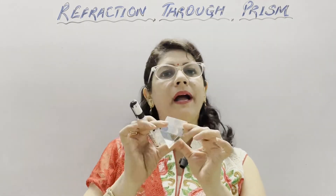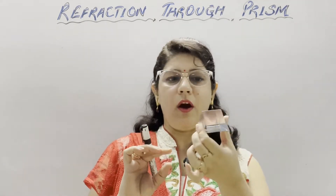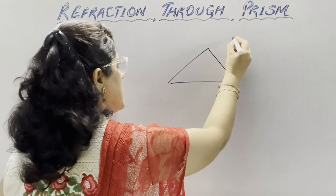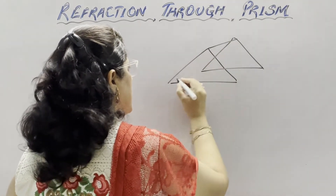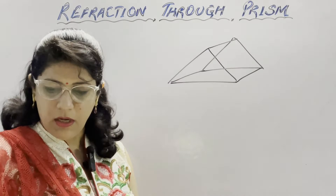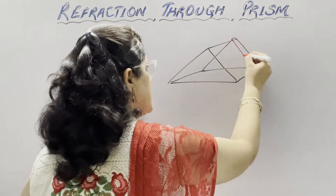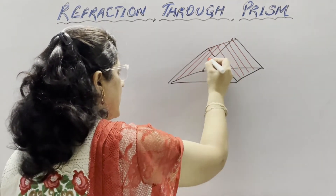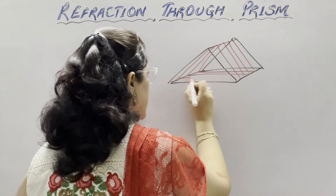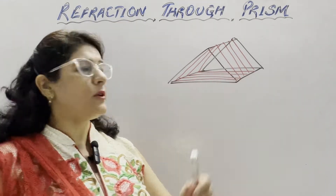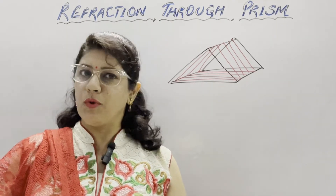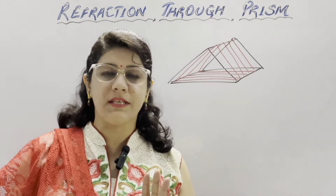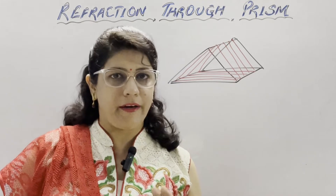Prism is a transparent medium bounded by plane surfaces. This is the triangular principal section of the prism. Three rectangular sections and two triangular sections give us a prism. So you can say that prism is a transparent medium bounded by five plane surfaces, out of which two are triangular and three are rectangular surfaces.